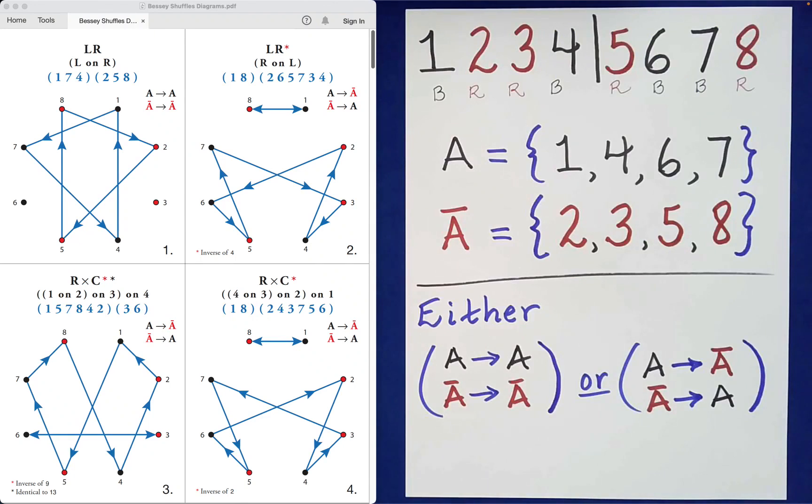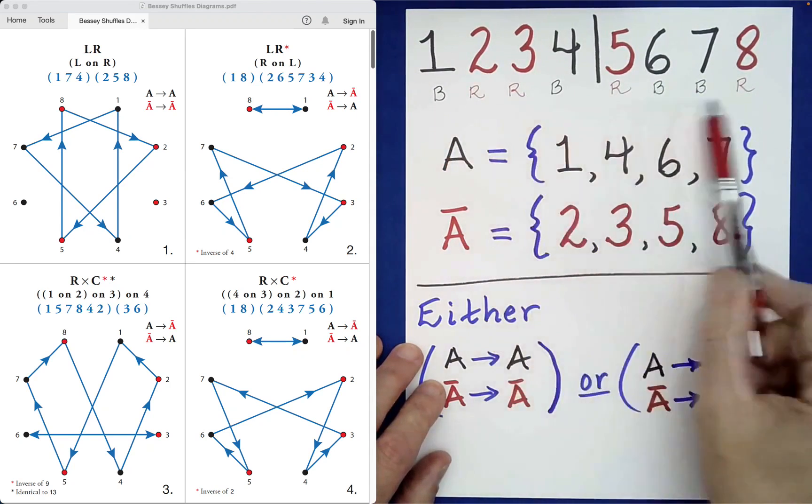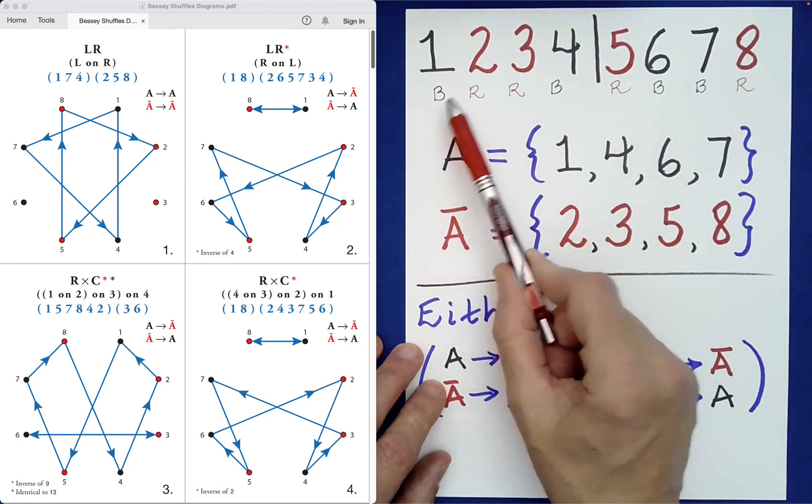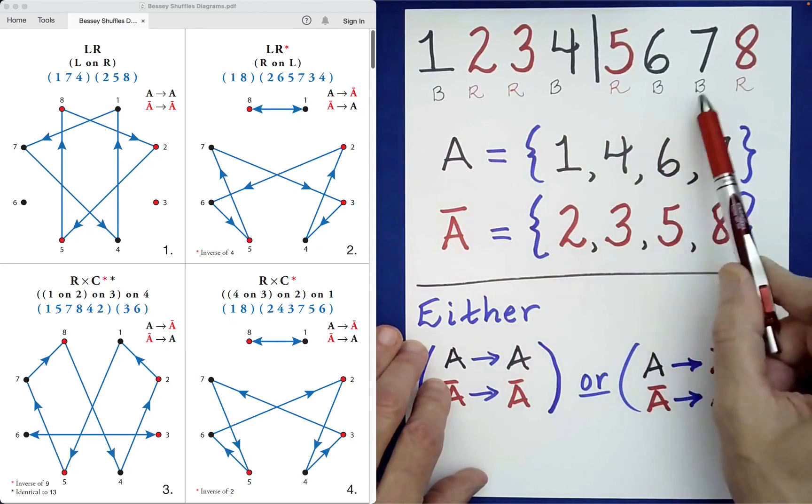To further aid us in understanding the diagrams on the left-hand side of the screen, I've color-coded the different digits. So if you want to picture these as a black card, a red card, a red card, black, red, black, black, red, that would work just fine as a model to represent the structure of a Bessey sequence.